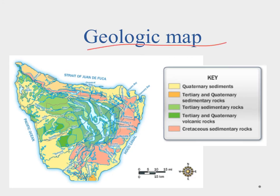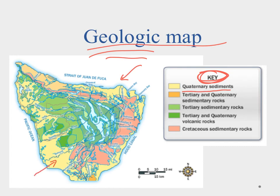A geologic map is important if you want to know what kind of rocks are showing or when those rocks date back to — it gives us geologic information. These are only valuable if we have the key. For example, quaternary sediments are shown in yellow, and if I was looking for a tertiary fossil, I'd look for tertiary sedimentary rocks in light green. A geologic map gives us an idea of the rock outcroppings showing, so it gives us a clue about what we're looking at in that area.